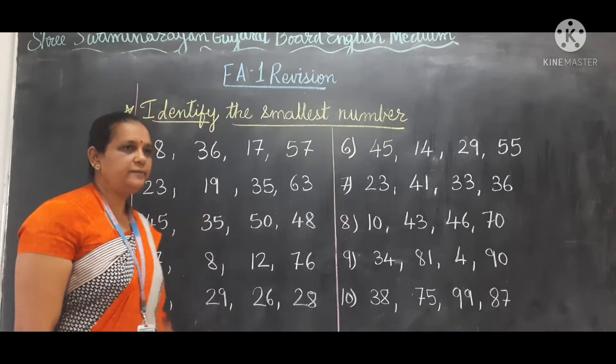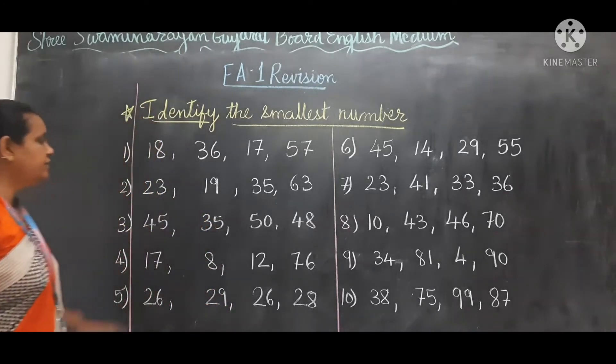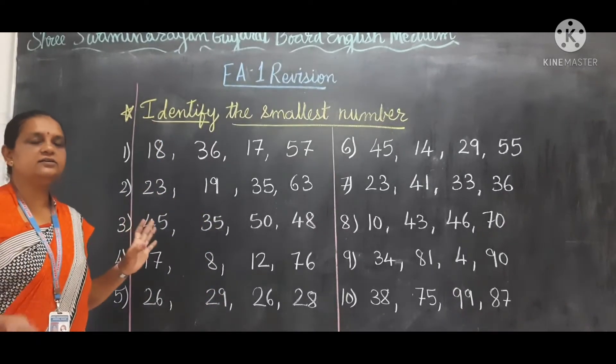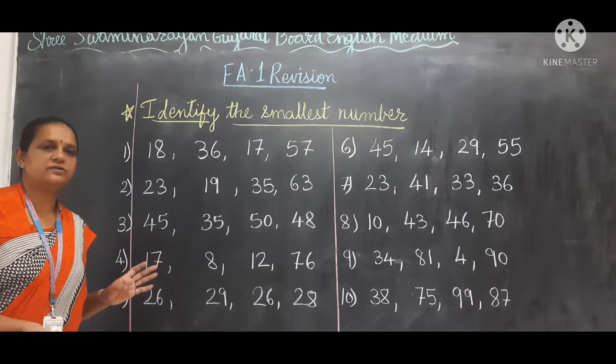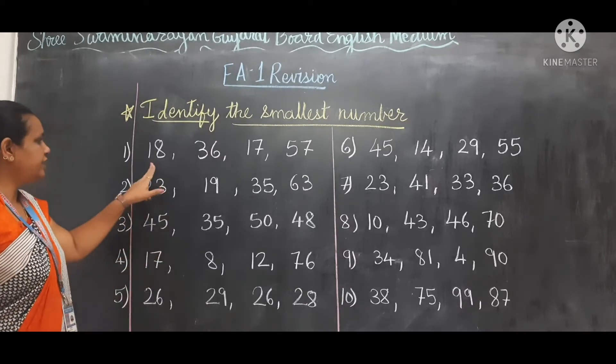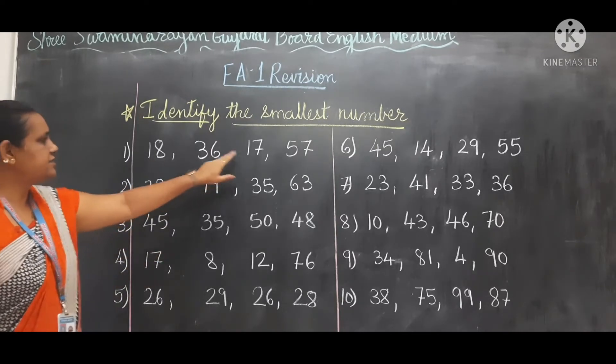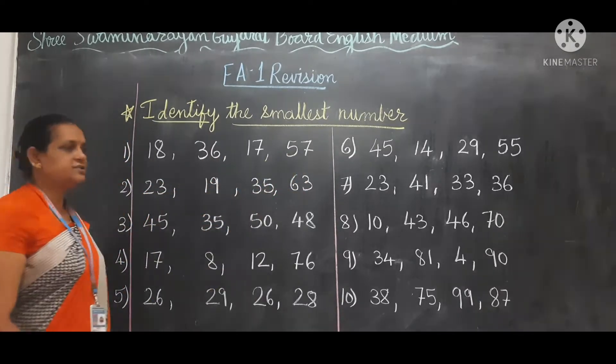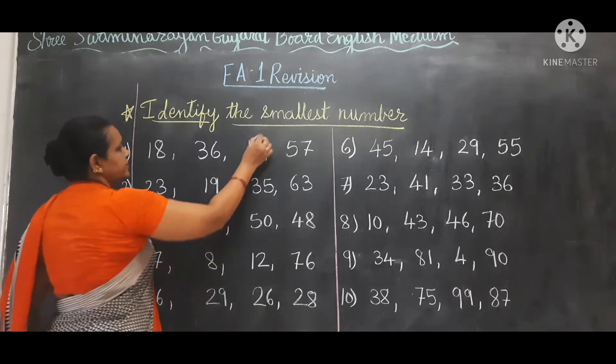Now here I will circle the smallest number. So 18, 36, 17, or 57 — which one is the smallest number?